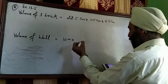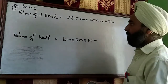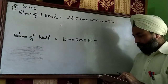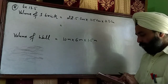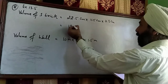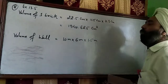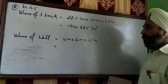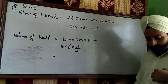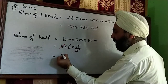We will use a calculator here. For the brick: 22.5 × 11.5 × 7.5 = 1940.625 cubic centimeters. For the wall: 10 × 6 × 1.5 meters. Since 1.5 = 15/10, the 10 cancels, giving us 6 × 15 = 90 cubic meters.